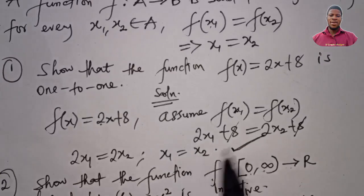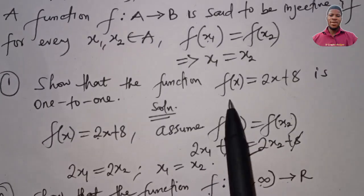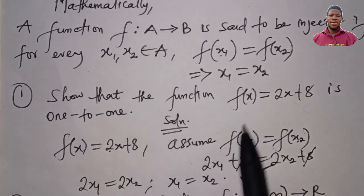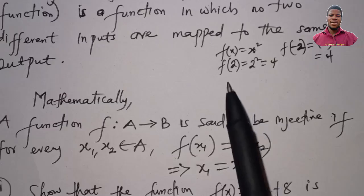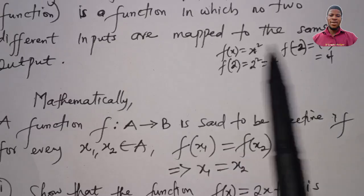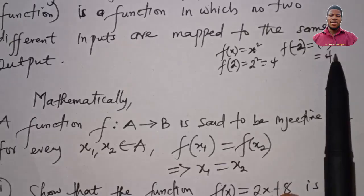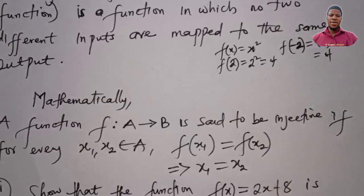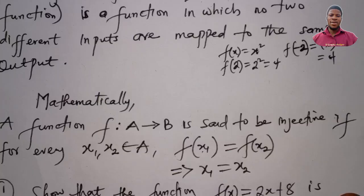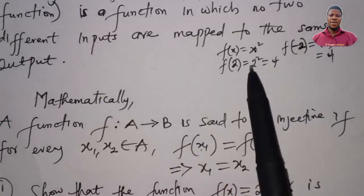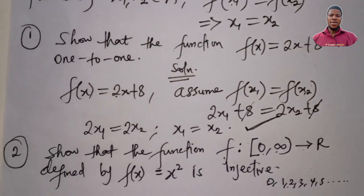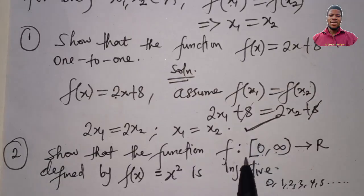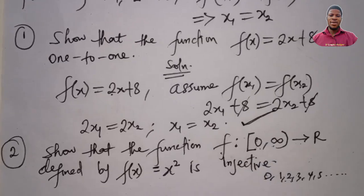As mentioned earlier, f(x) = x² is not injective if the domain is all real numbers, since -2 and +2 both produce the same output. That gives two different inputs mapping to one output, violating injectivity. But when the domain is restricted to non-negative integers — excluding negative numbers — the function becomes injective.